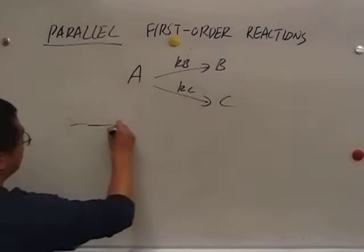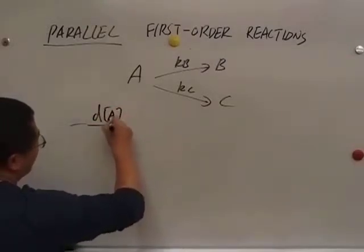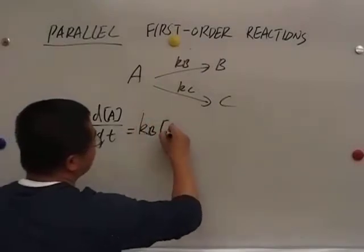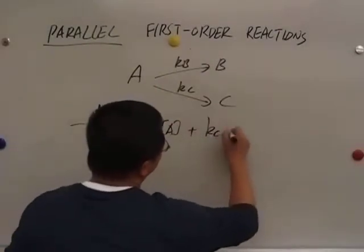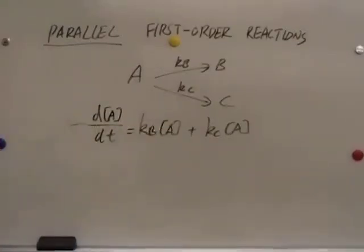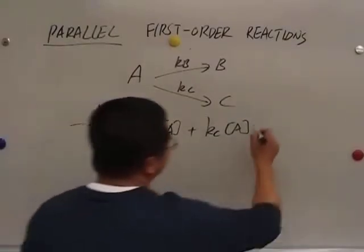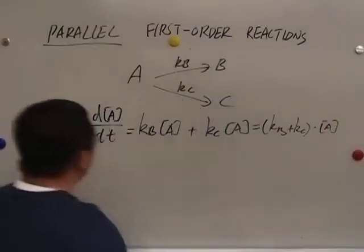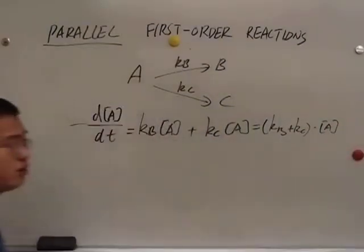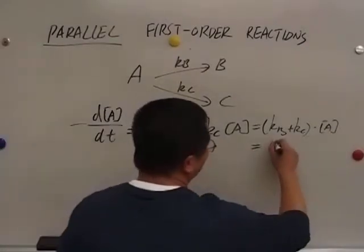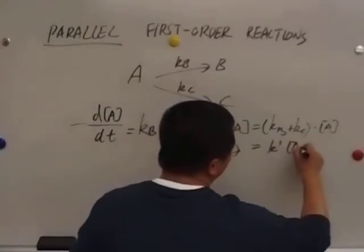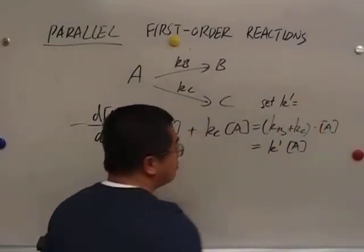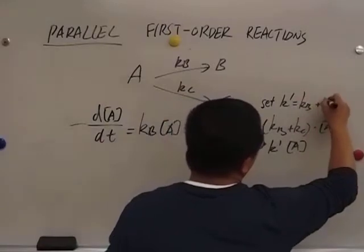Therefore, the consumption rate of A is actually KB times A plus KC times A. And then this is equal to KB plus KC times A. This is actually just a simple first-order kinetics. If you set K prime to be KB plus KC.